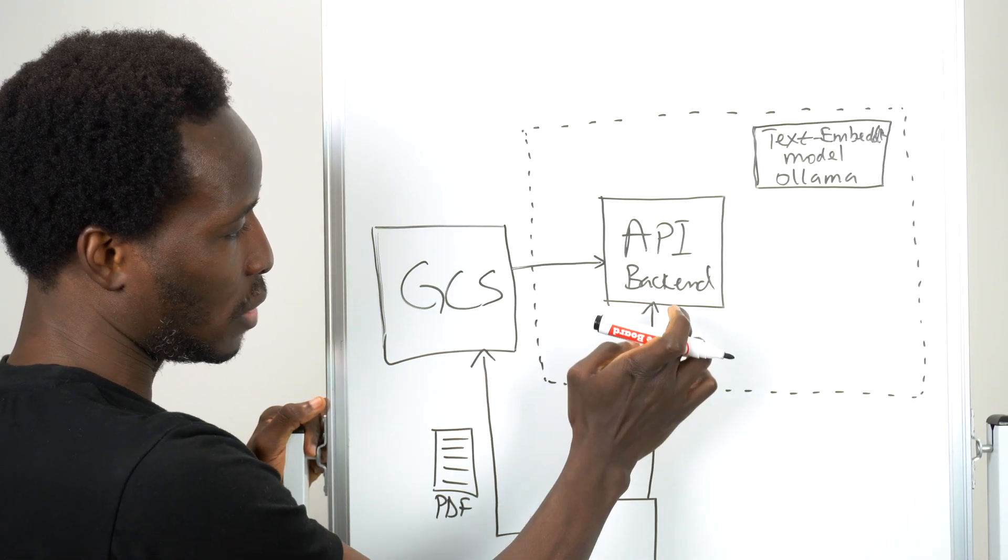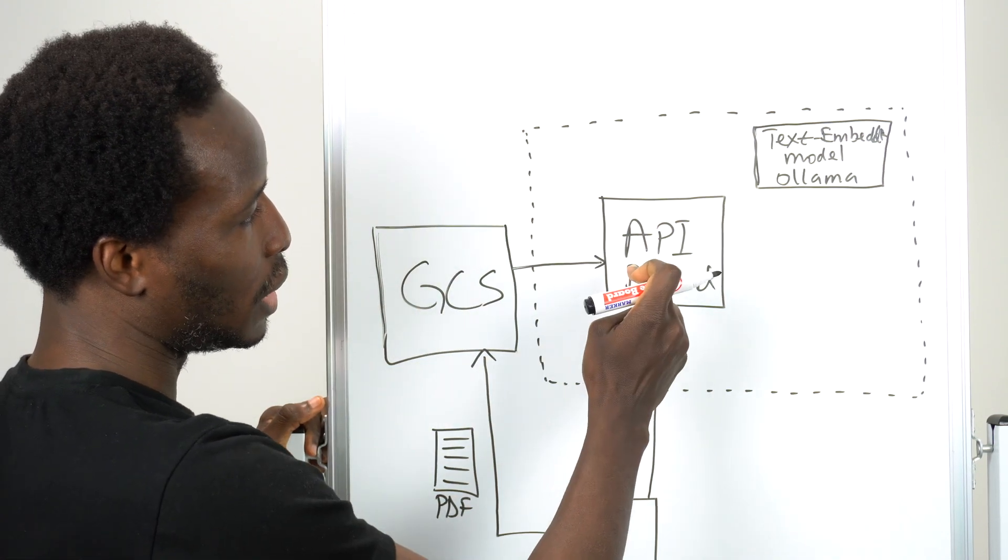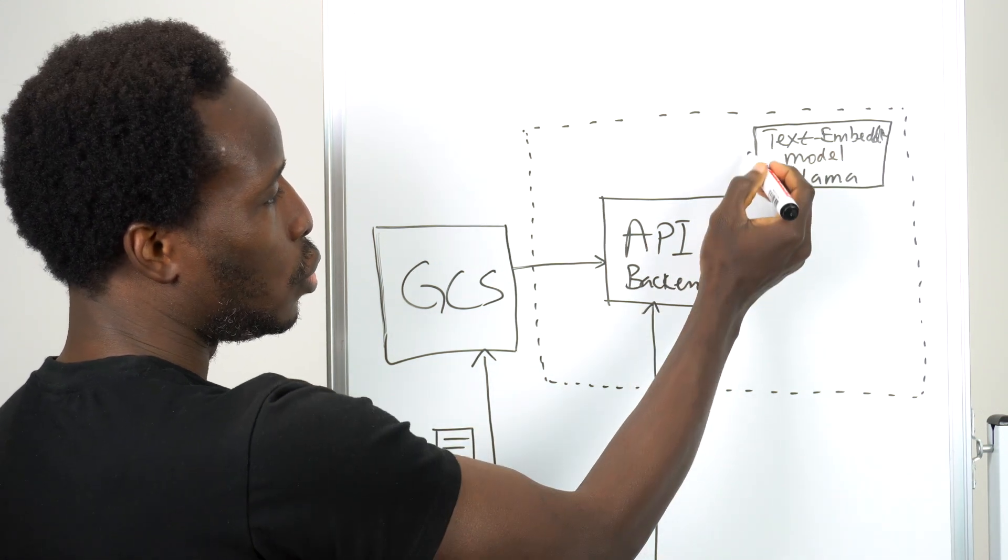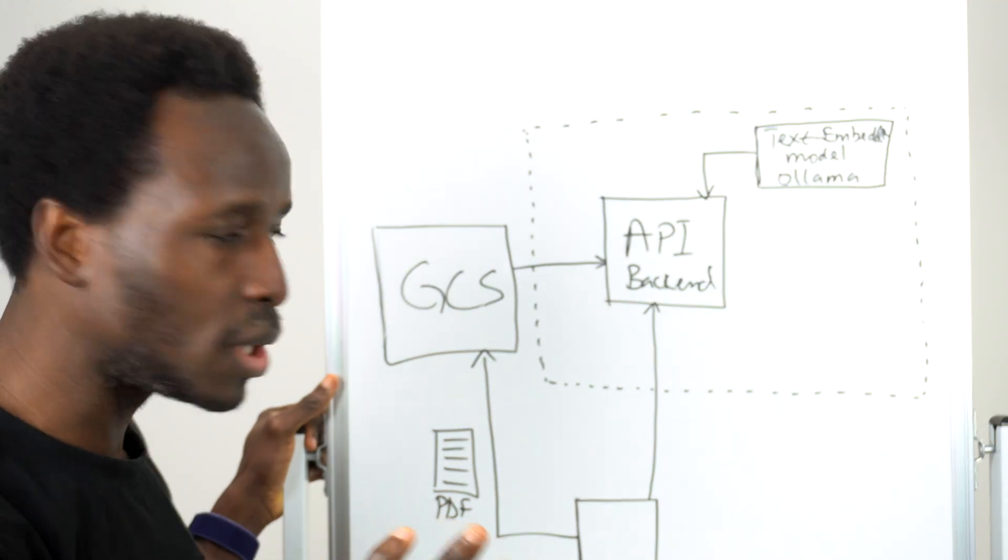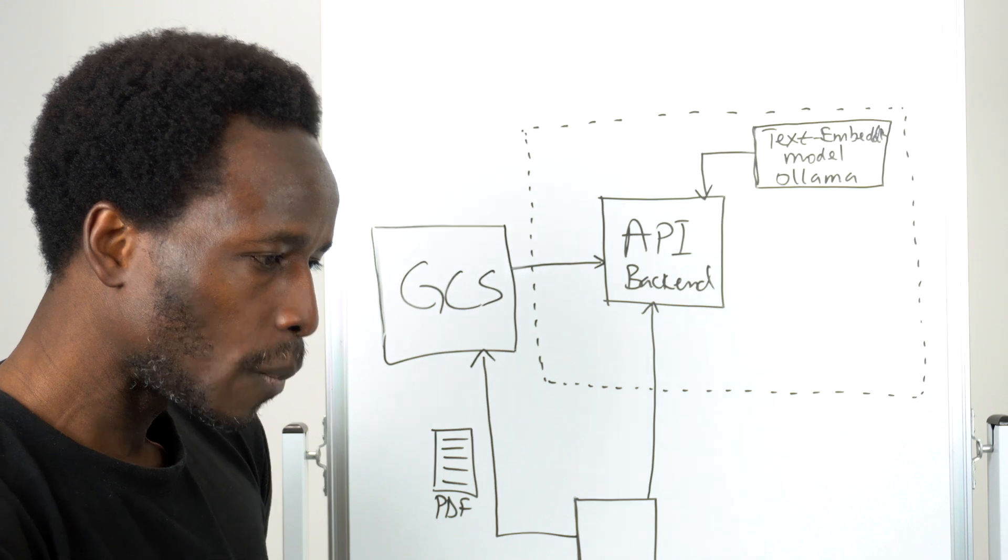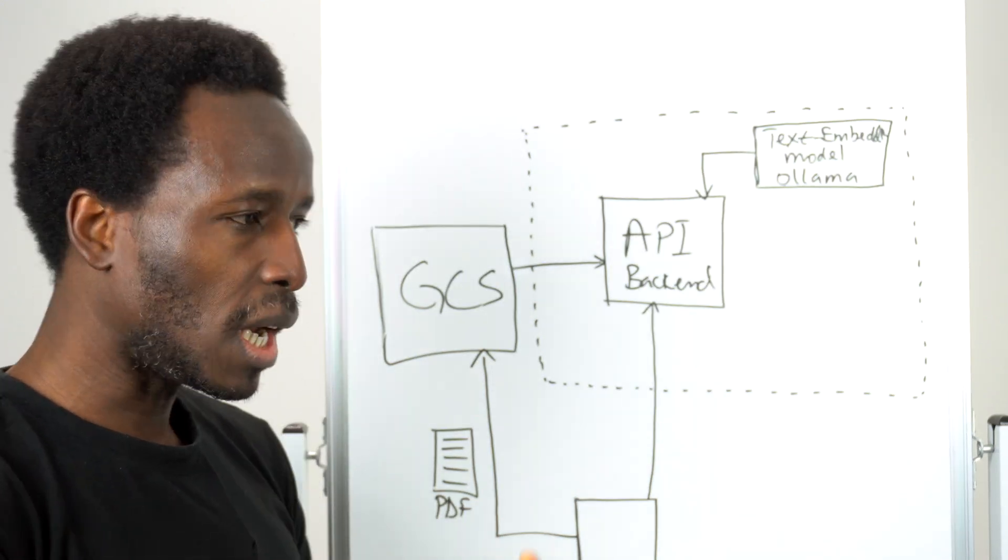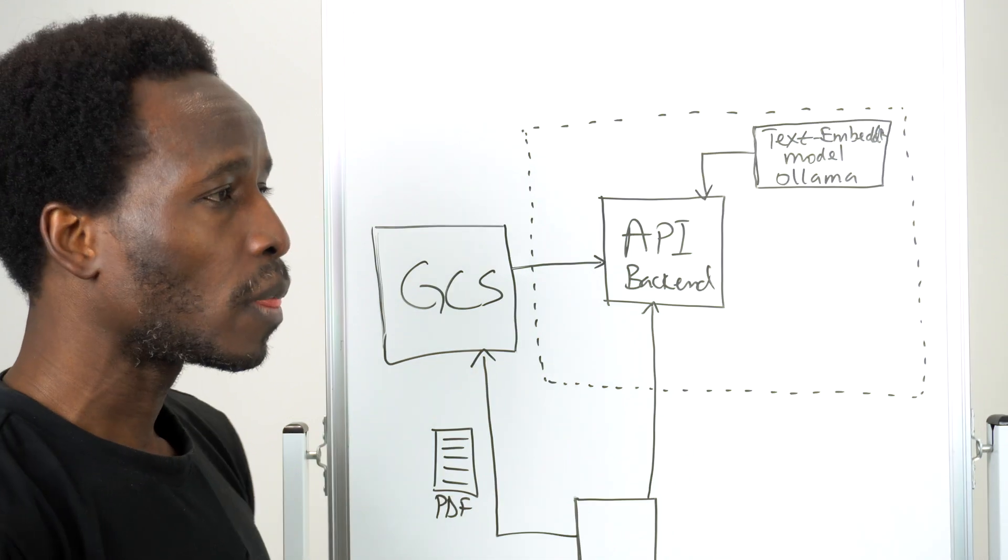But the idea is once we have a document uploaded and the app tells us here's a new document with the URI, we go to GCS, pull the document, and then use this embedding model to generate our embeddings for that particular document. So you might have 10 pages and then you decide on what the chunk size would be. Are you going to go by page? Are you going to go by paragraph? Whatever you decide is something you need to keep on trying to get the best chunk for your data.